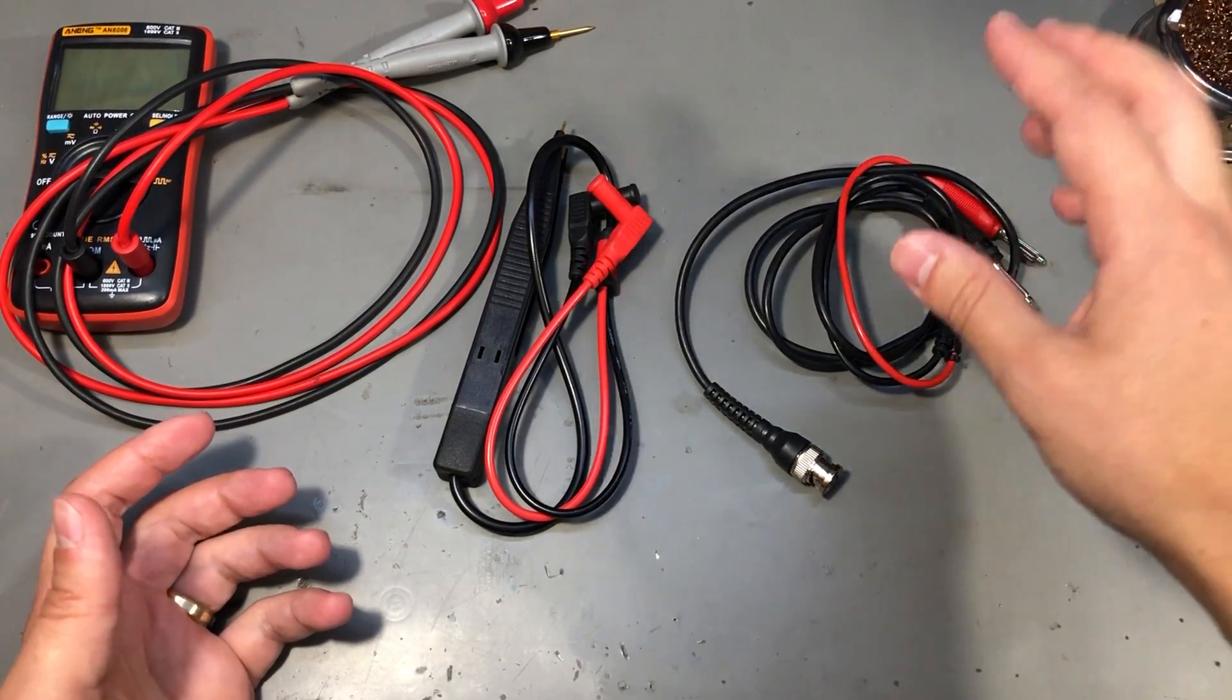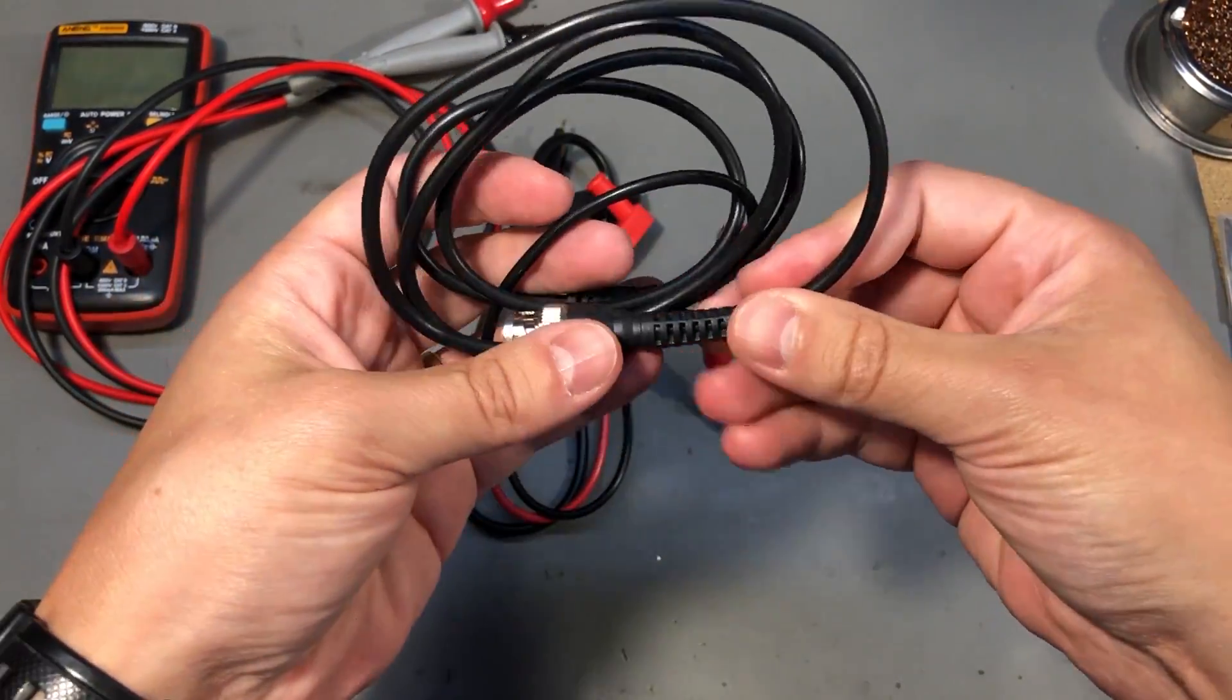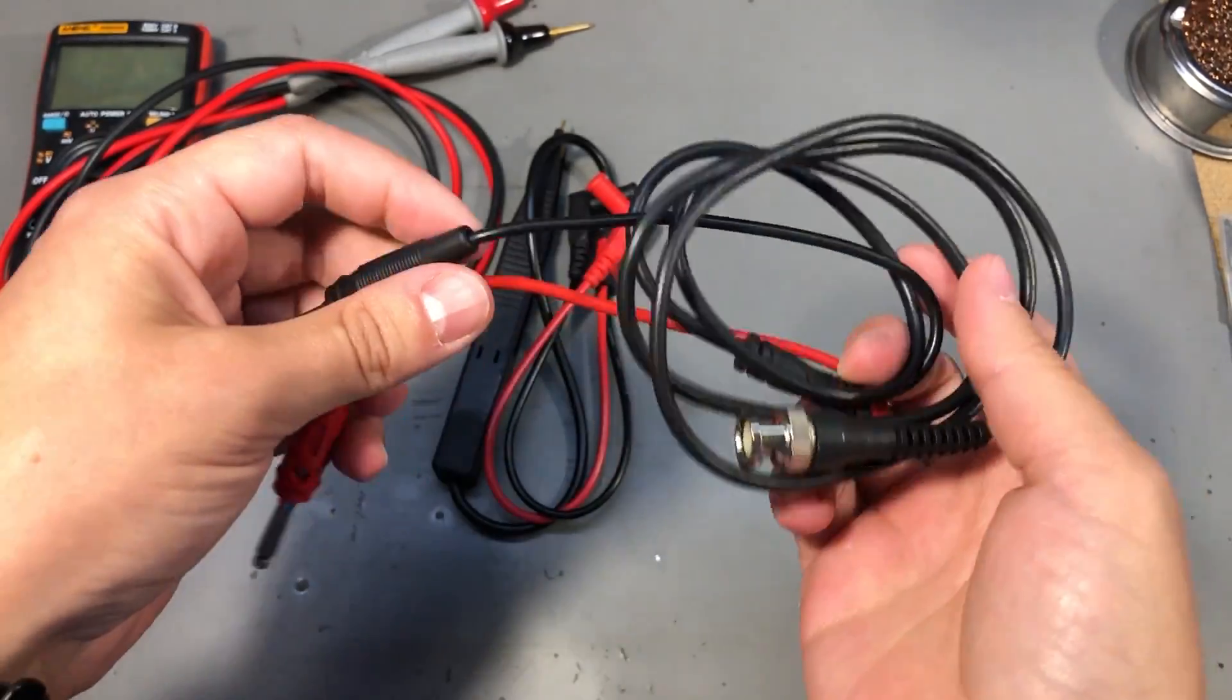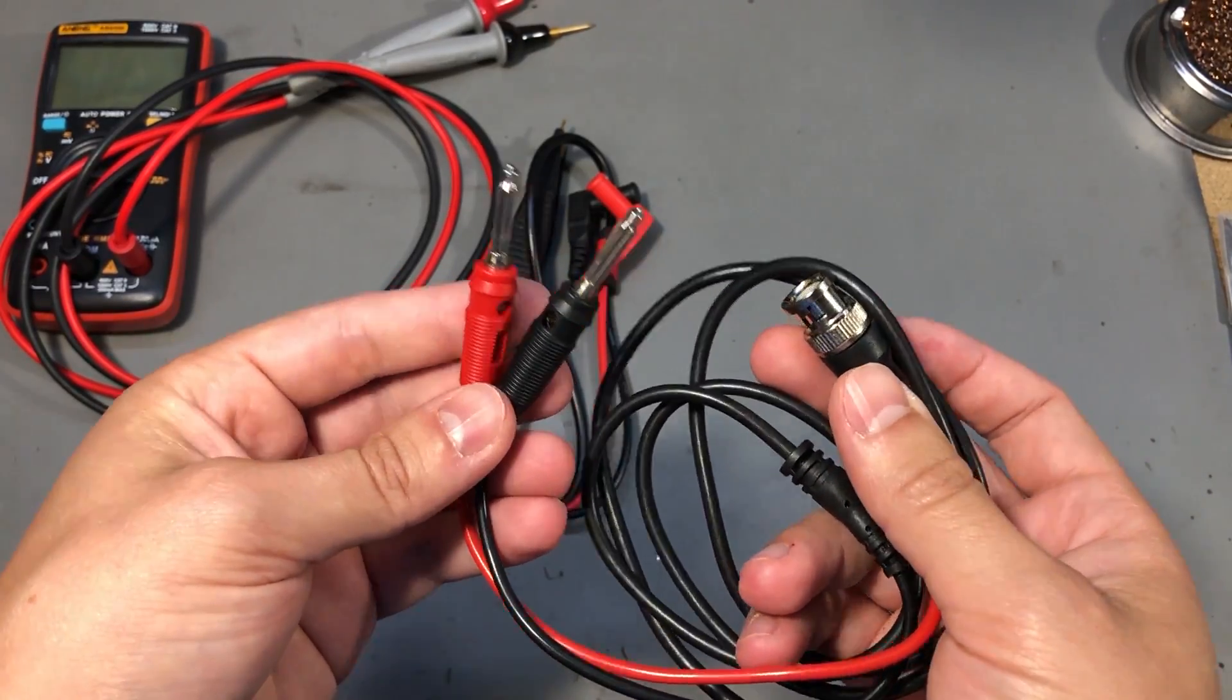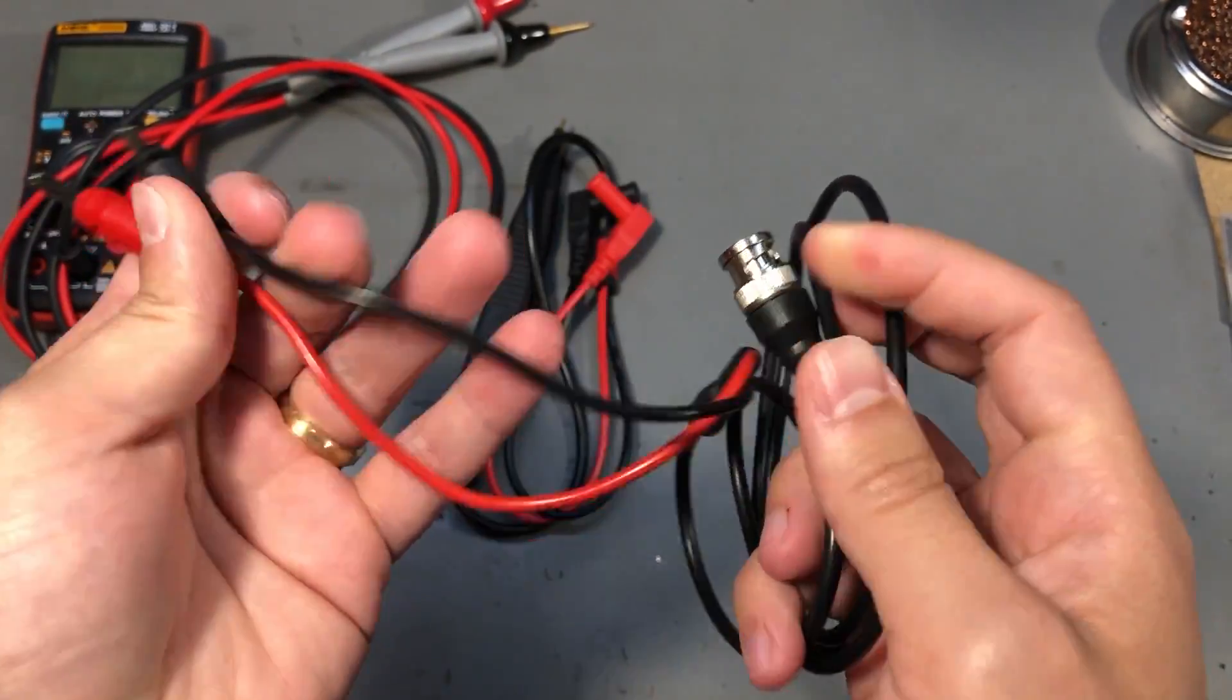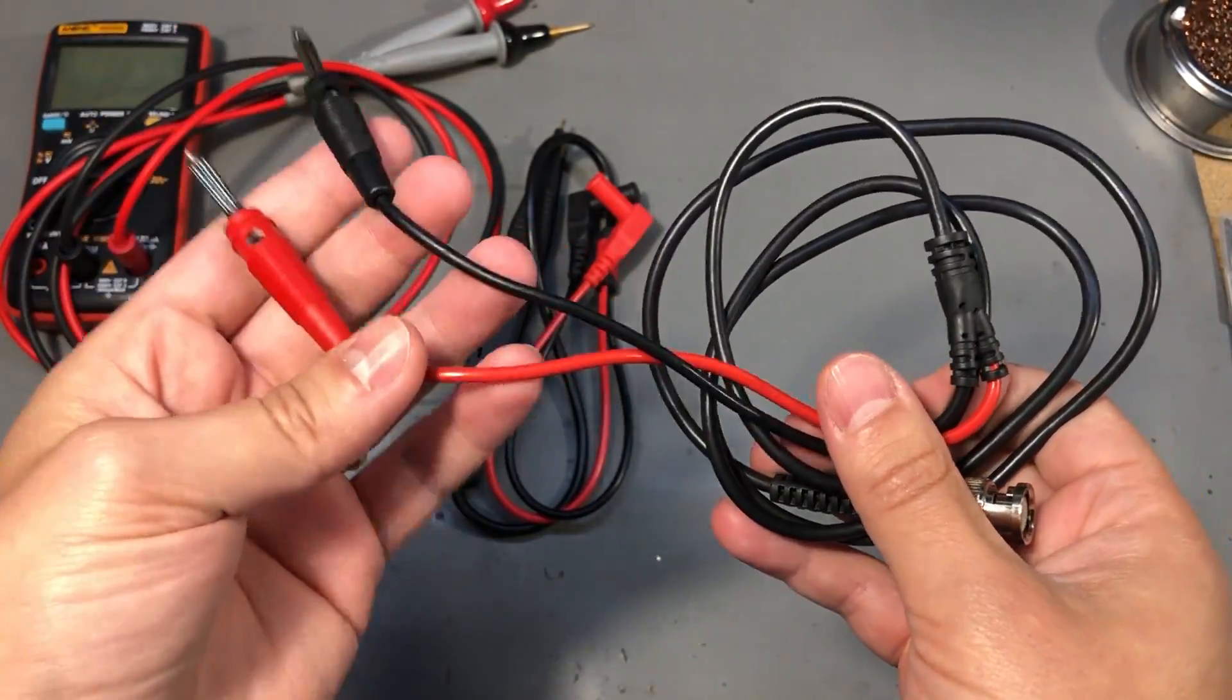Next I have a couple of test leads and this one for example has a BNC connector on one end and two banana connectors at the other end. This would be useful for connecting your oscilloscope to a power supply or a similar situation. These wires feel pretty soft but the rest of the cable is not as soft. Overall I think this is PVC insulation, not silicon.